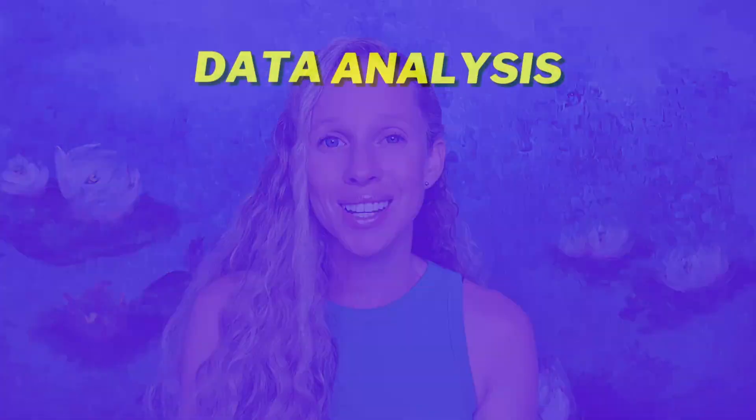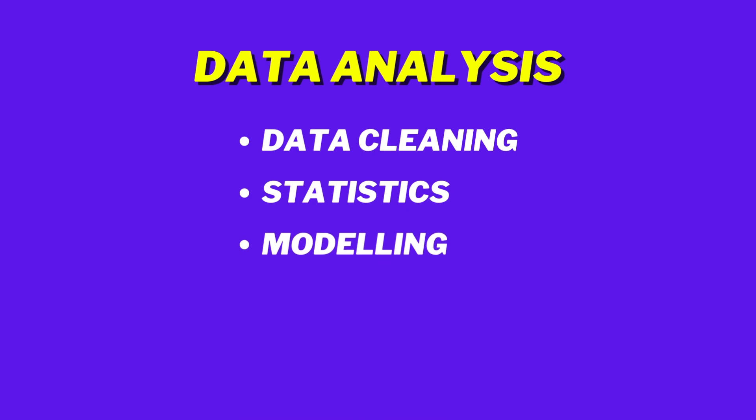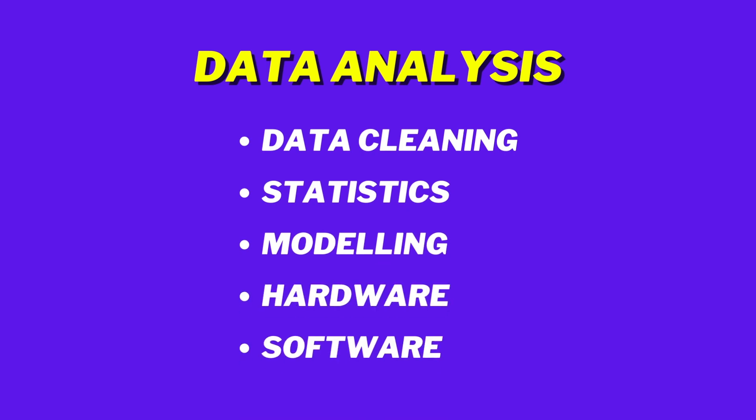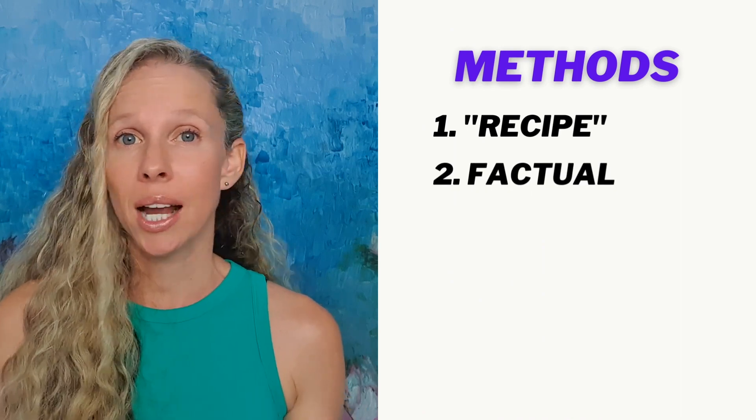Then in your data analysis section, include what you did to the data after you collected it, how you processed your data, whether you used statistics or mathematical modeling, and remember to include your hardware and software including the version numbers. Your methods section should be written in a factual or blunt manner, much like a Wikipedia page. We're not providing opinions here, and that's partly why it's so easy to write.